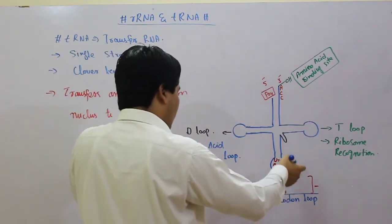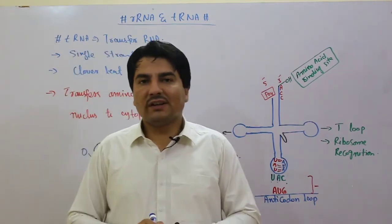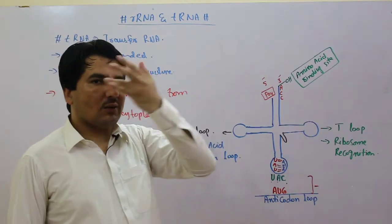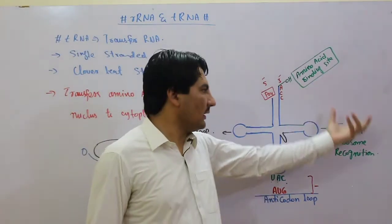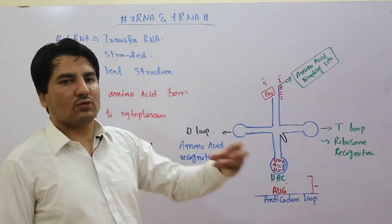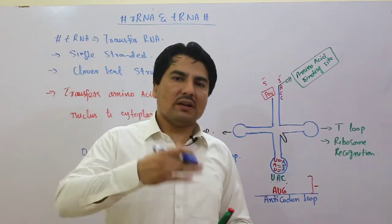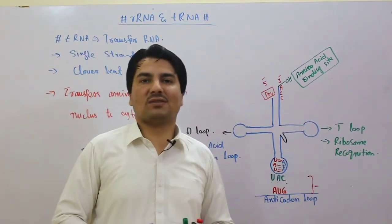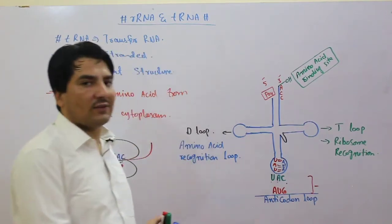Is tarah se ek peptide ban jata hai. Jo transfer RNA hai, dobara usi messenger RNA se jo uska doosra codon hai usko read karega. Read karne ke baad dobara nucleus mein chala jata hai, wahan amino acid recognition hoti hai, bonding hoti hai, phir dobara ribosome ko recognize karta hai, aur is tarah se doosra peptide ban jata hai — jise protein kehte hain. So this is the structure and function of transfer RNA.